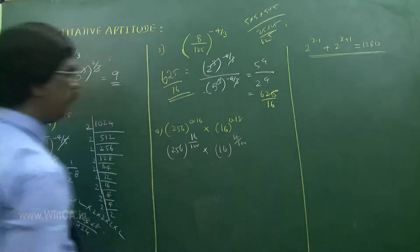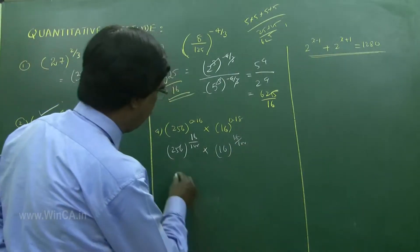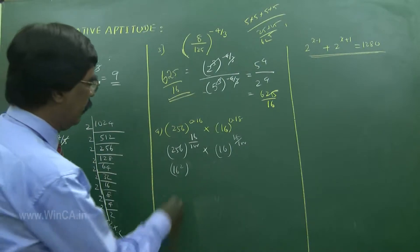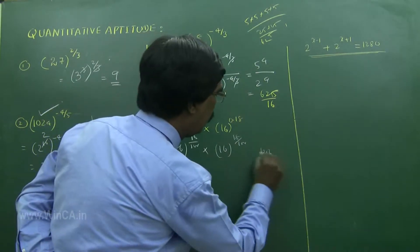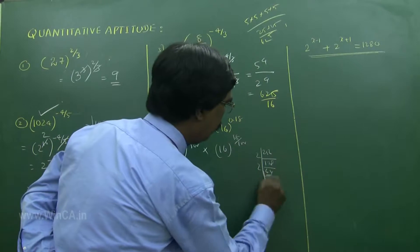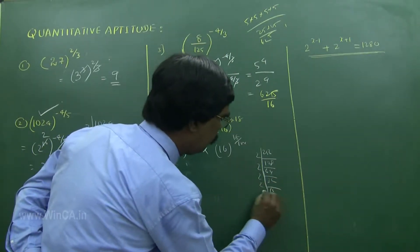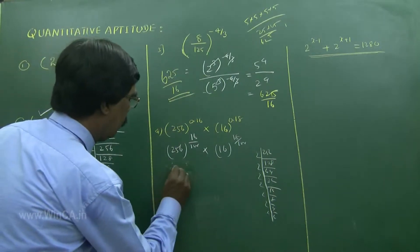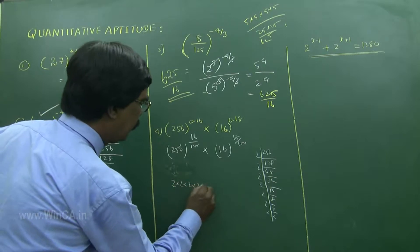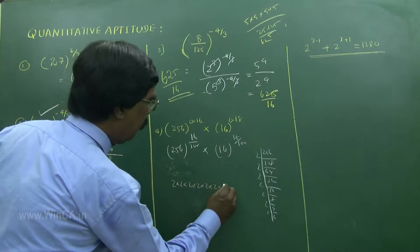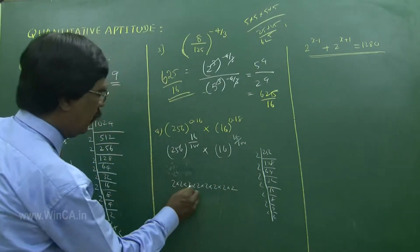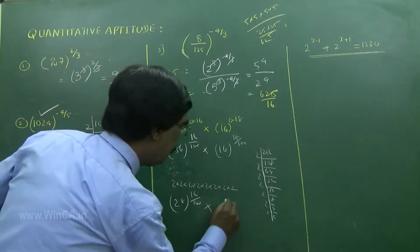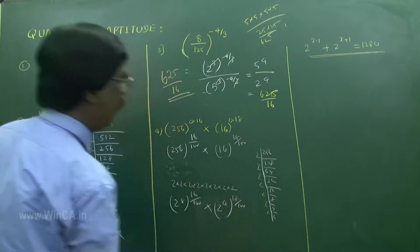Next, you see 256. Write the first part as 16 by 100 power and the second as 18 by 100 power. Now 256 is 16 squared, or 2 power 8. So we have 2 power 8 whole to the power of 16 by 100, and 2 power 4 whole to the power of 18 by 100.